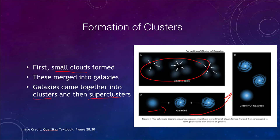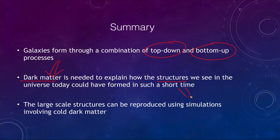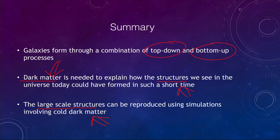To summarize: galaxies form through a combination of top-down and bottom-up processes, and dark matter is required to explain the structures of the universe we see today. There is no other way they could have formed in just 14 billion years. We can also reproduce the general features we see using cold dark matter simulations, producing the structures we actually observe in the proper amount of time. That concludes this lecture on the formation of large-scale structure. Have a great day everyone, and I'll see you in class.